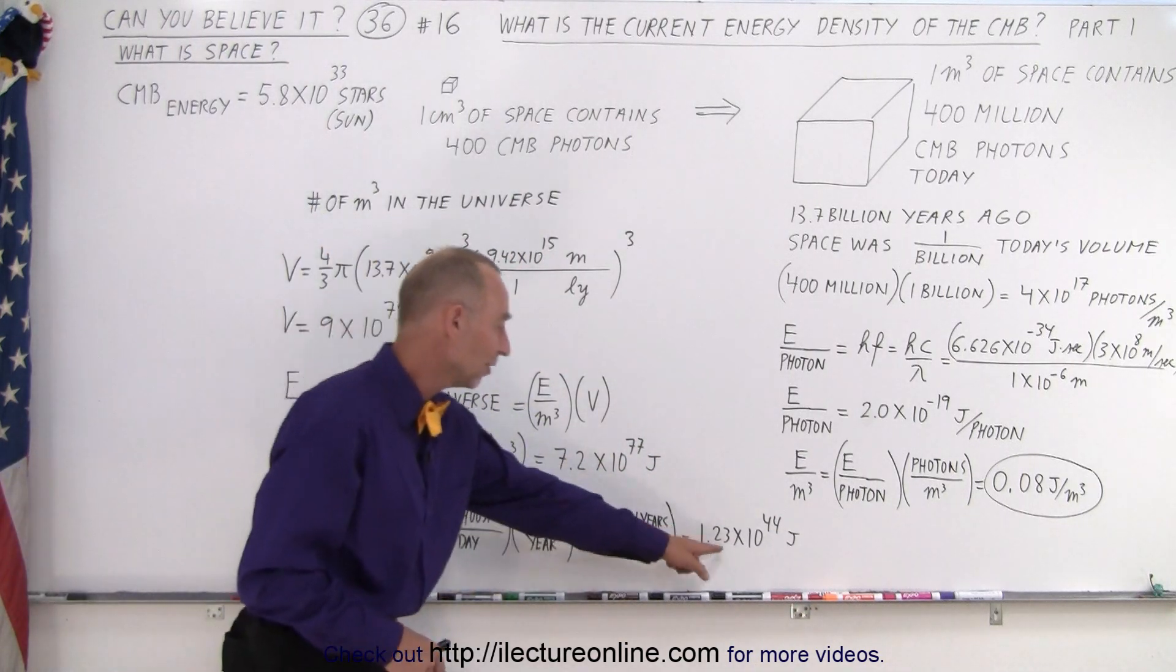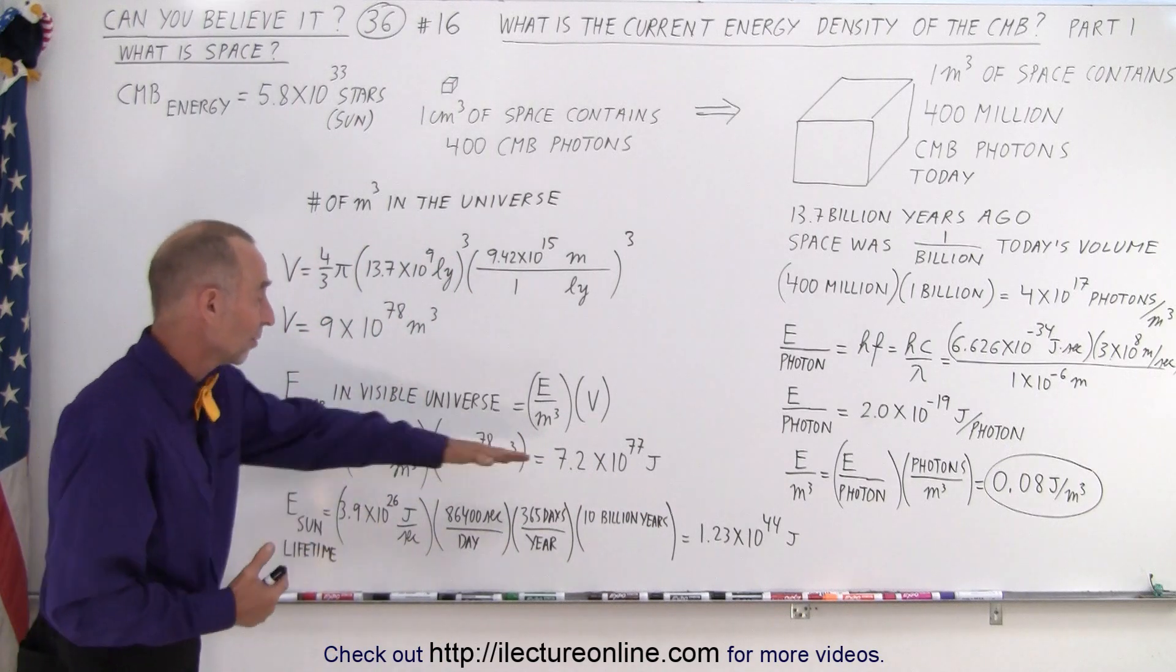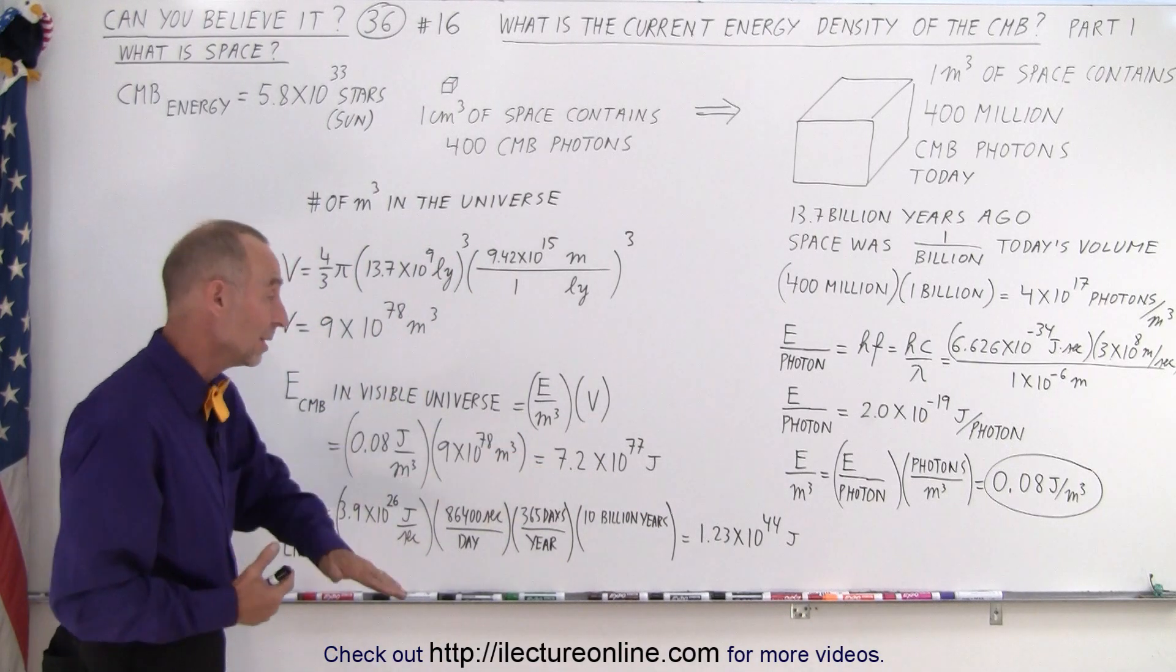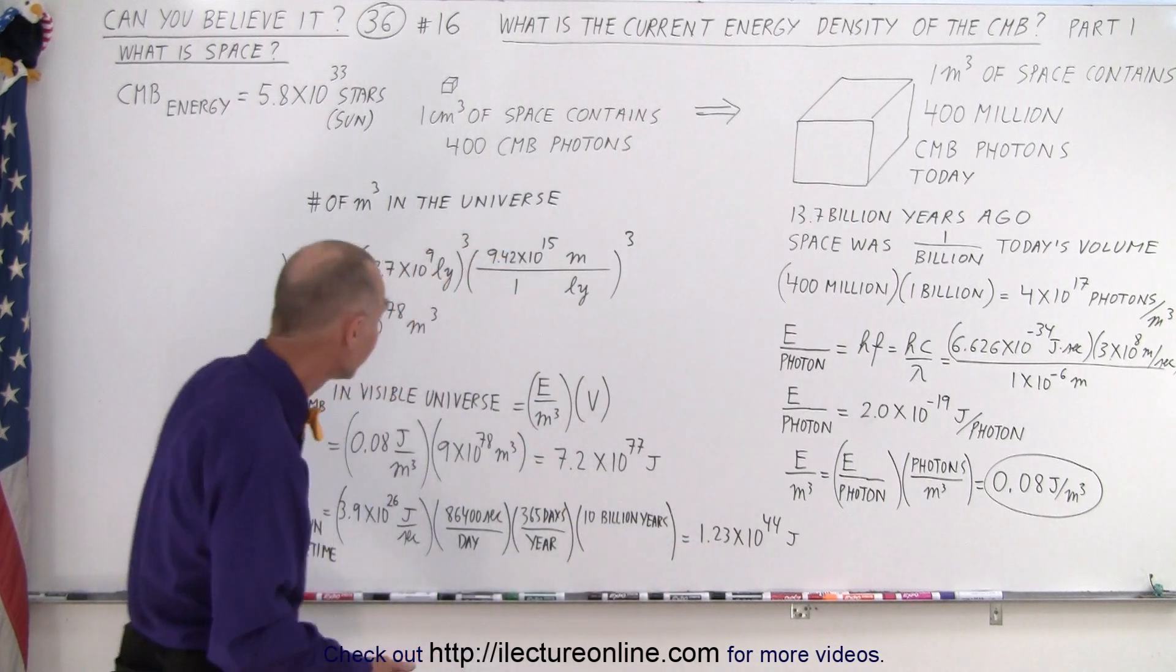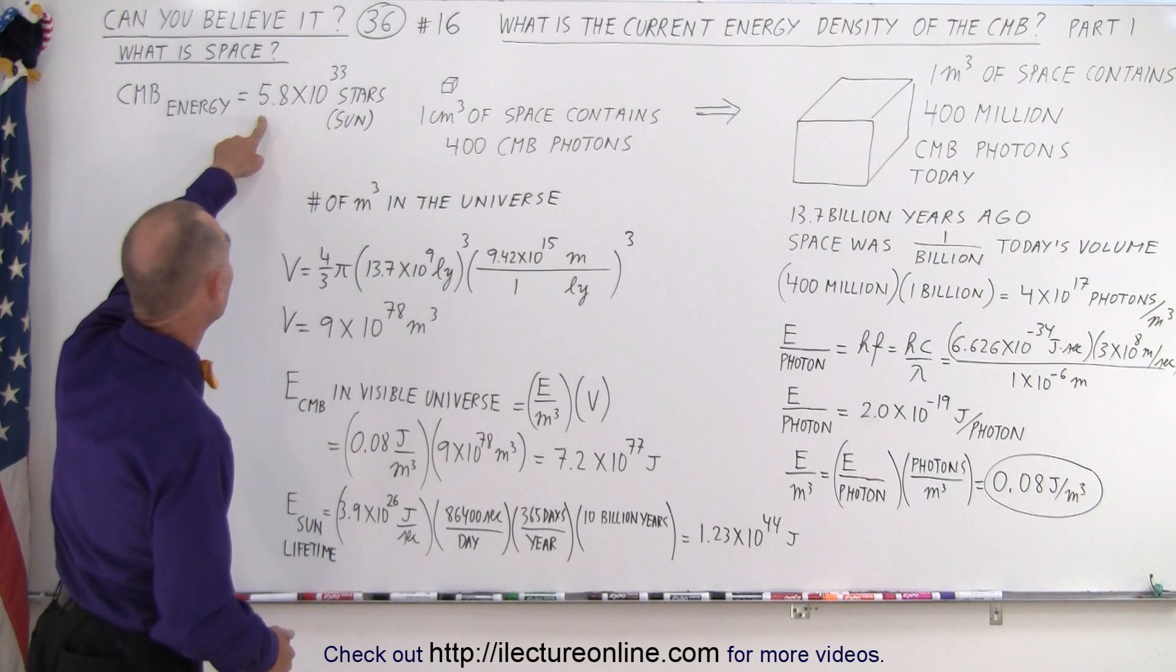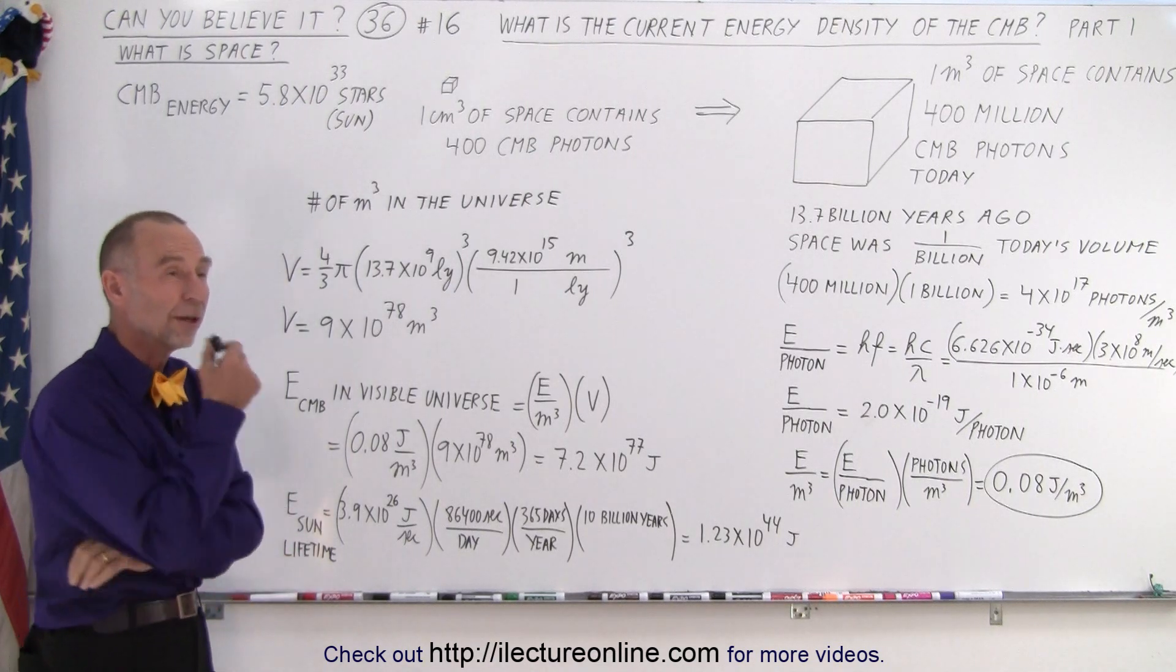Now, compare this number to this number. When I divide that, the total amount of energy in the CMB radiation, by the energy output of the sun, which is bigger than the typical star, we would need 5.8 times 10 to the 33 stars, the size of the sun.